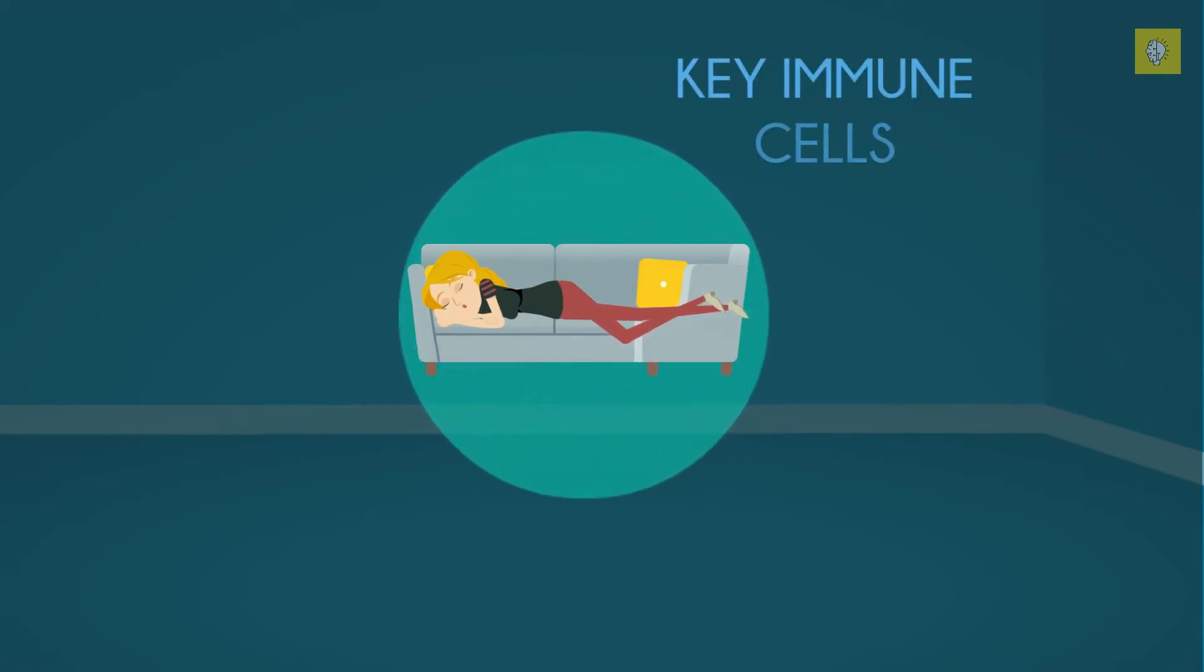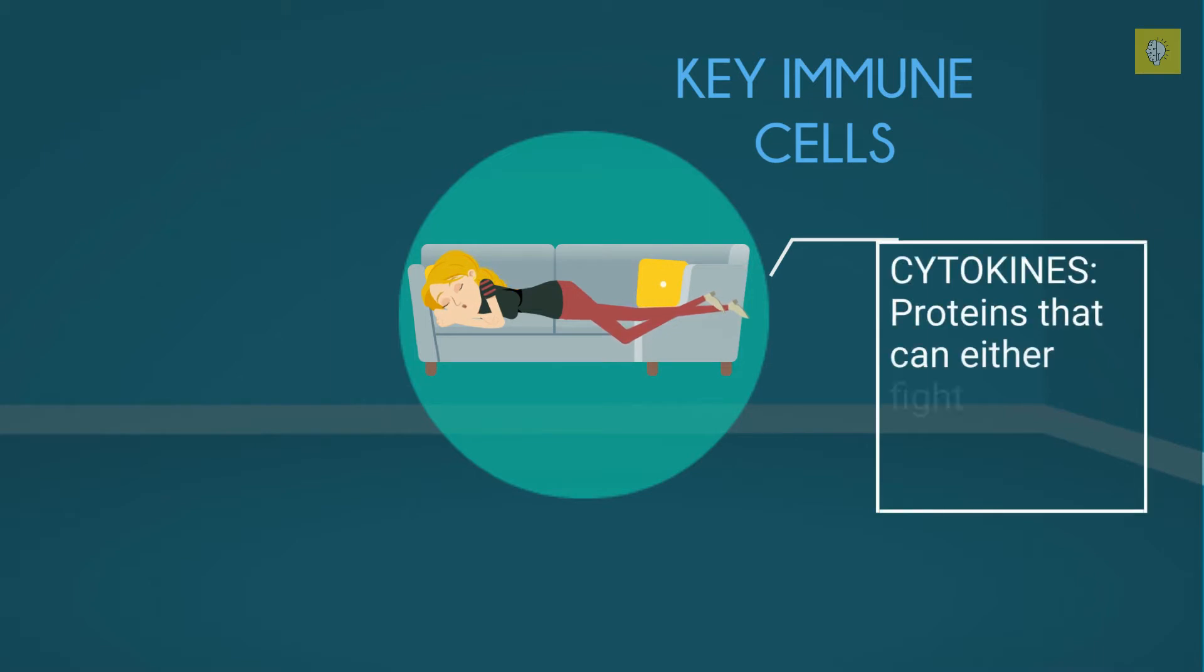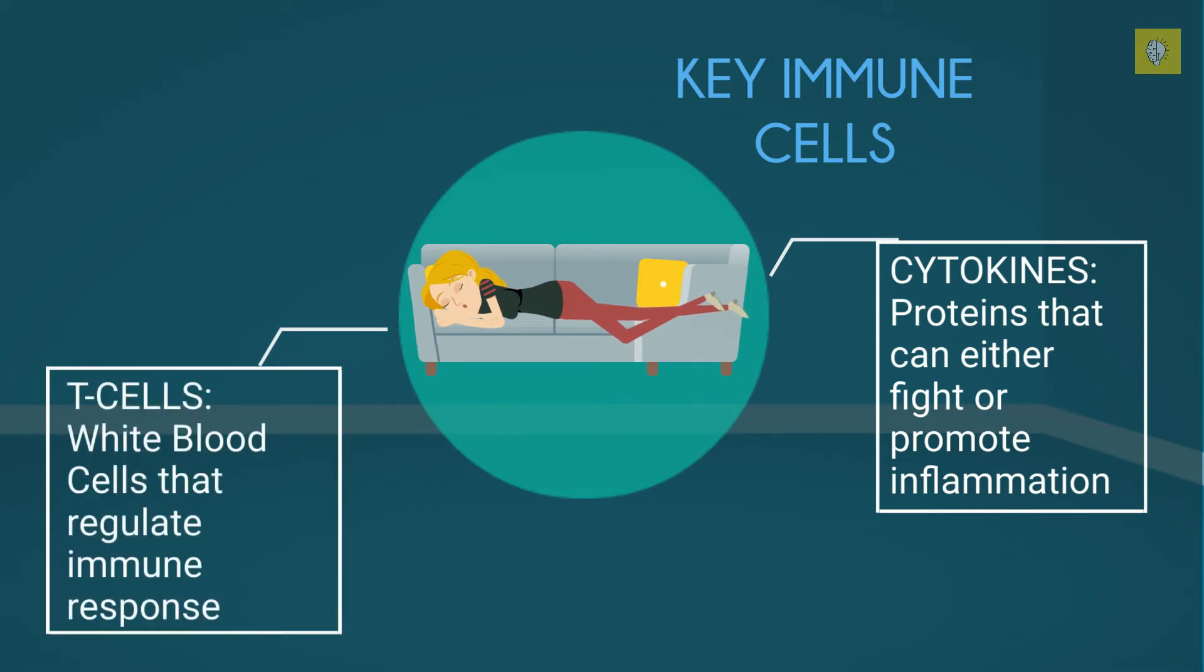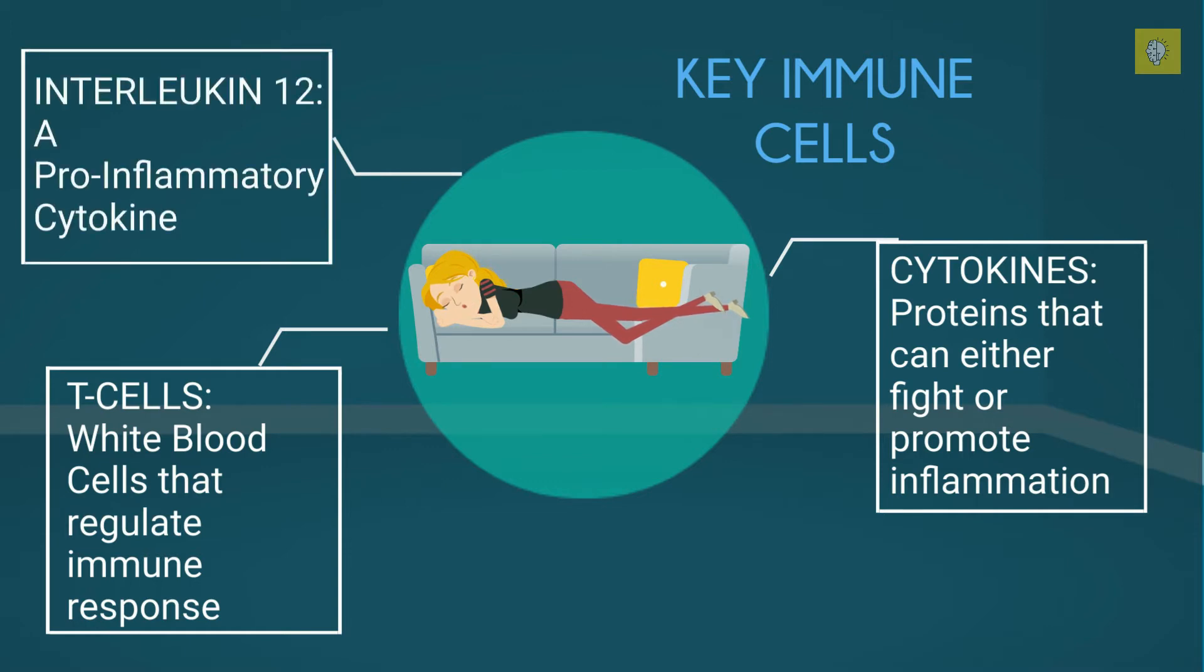More specifically, sleep is a time when your body produces and distributes key immune cells like cytokines, a type of protein that can either fight or promote inflammation, T cells, a type of white blood cell that regulates immune response, and interleukin 12, a pro-inflammatory cytokine.